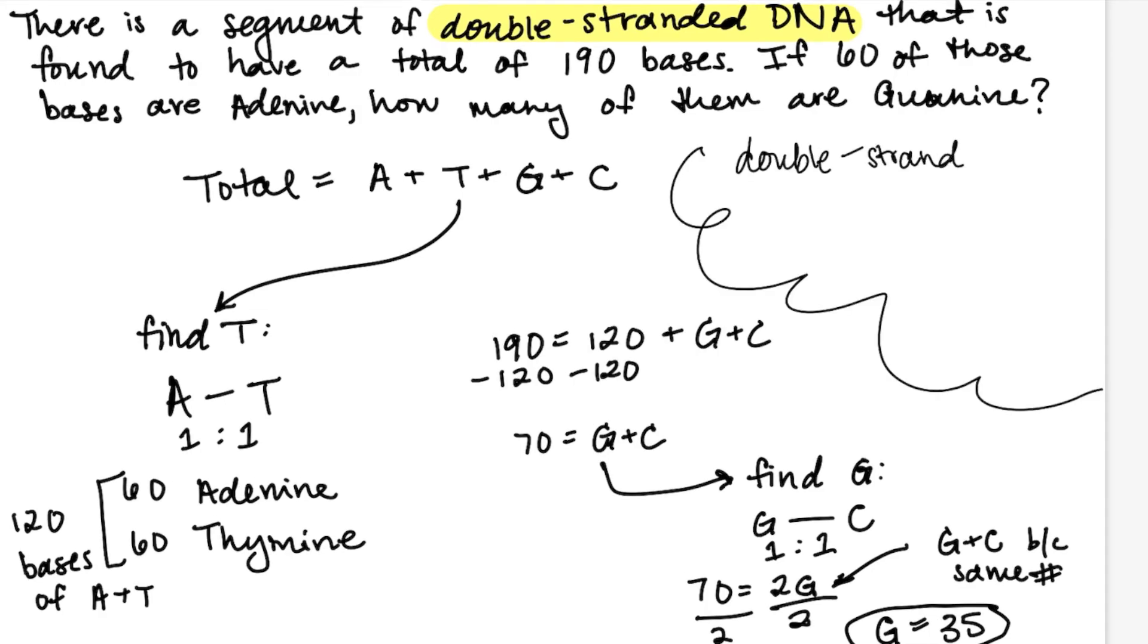If this were a piece of double-stranded RNA, the only thing we would change is that we would be able to find the number of uracil instead of thymine from the number of adenine.